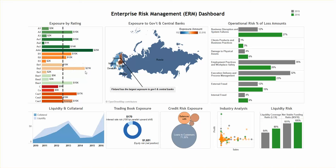The Exposure by Rating is a simple bar chart that shows us the amount of money at risk within each of the credit rating buckets, such as A1, A2, AAA, and so on. We can also see the average line going vertically to see where we have exposure that is higher or lower than the average exposure.